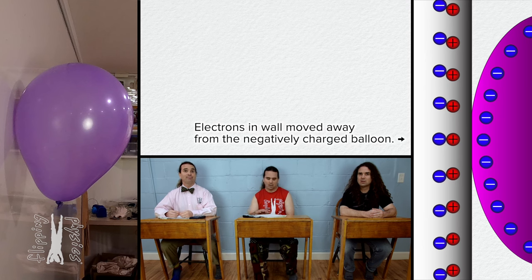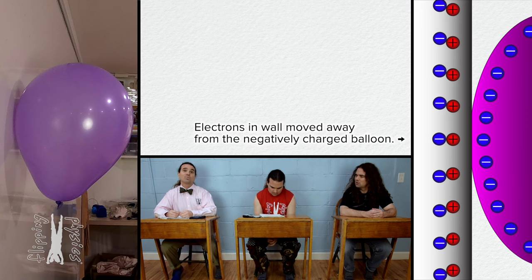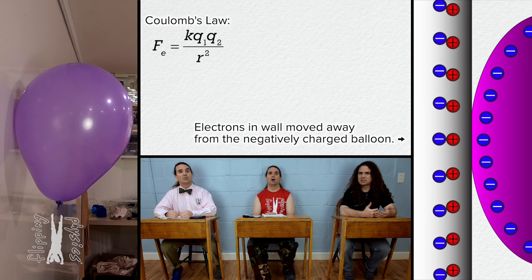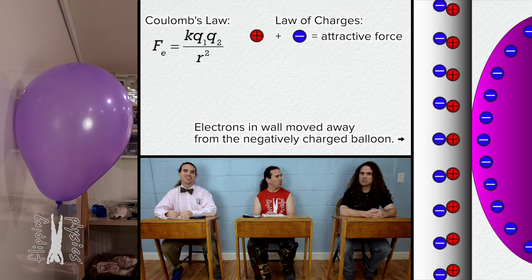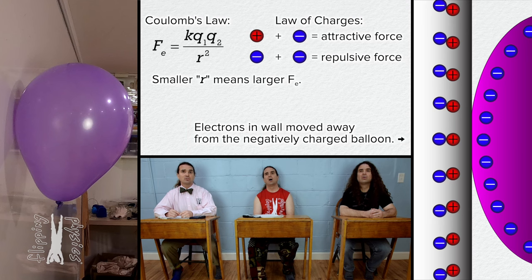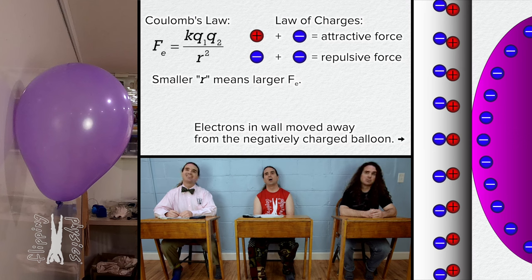Remember Coulomb's law? It is the electric force equals Coulomb's constant times charge 1 times charge 2 divided by the square of the distance between the centers of charge. There is an attractive force between all the positively charged protons in the wall and the negatively charged electrons in the balloon. And there is a repulsive force between all the negatively charged electrons in the wall and the negatively charged electrons in the balloon. But how is there a net attractive force? Because according to Coulomb's law, the smaller the distance between the centers of charge of the two charges, the larger the electric force, because the electric force is inversely proportional to the square of r, the distance between the centers of charge.